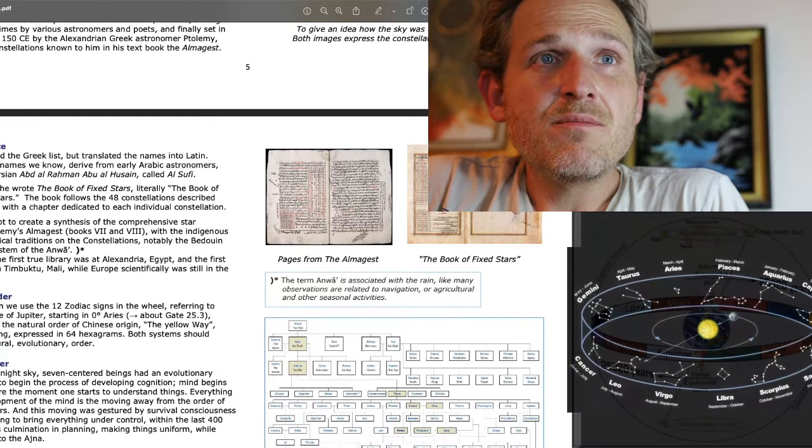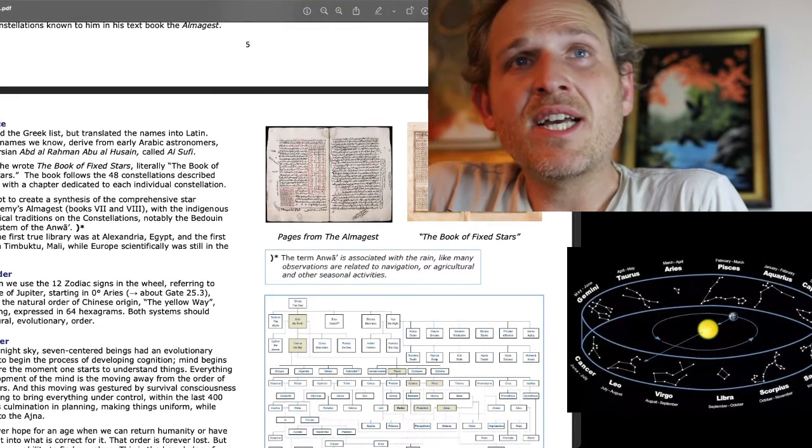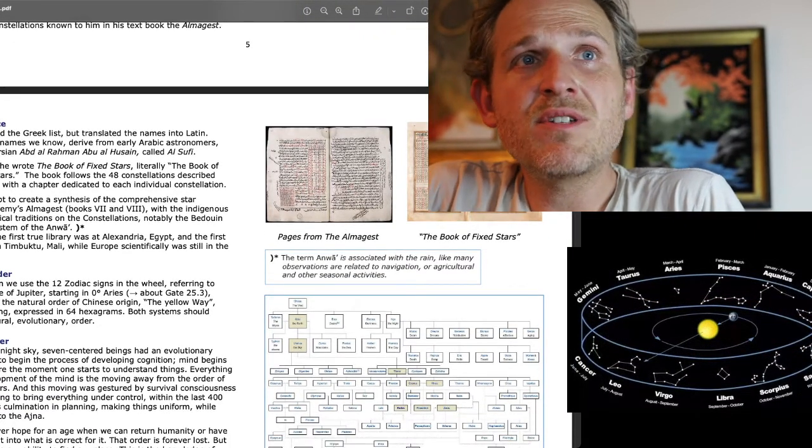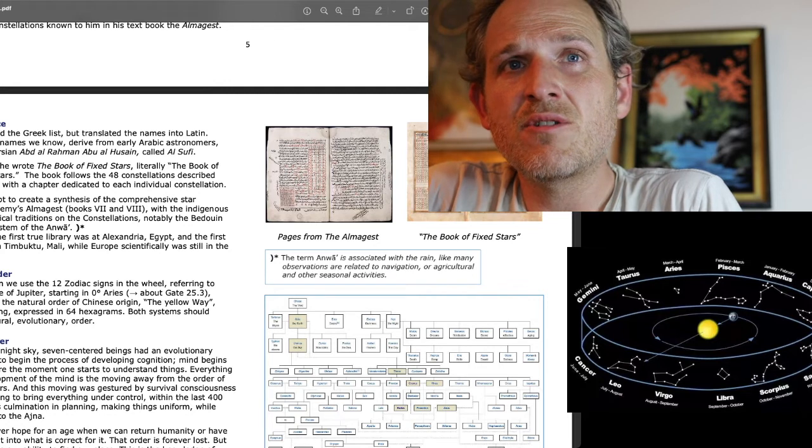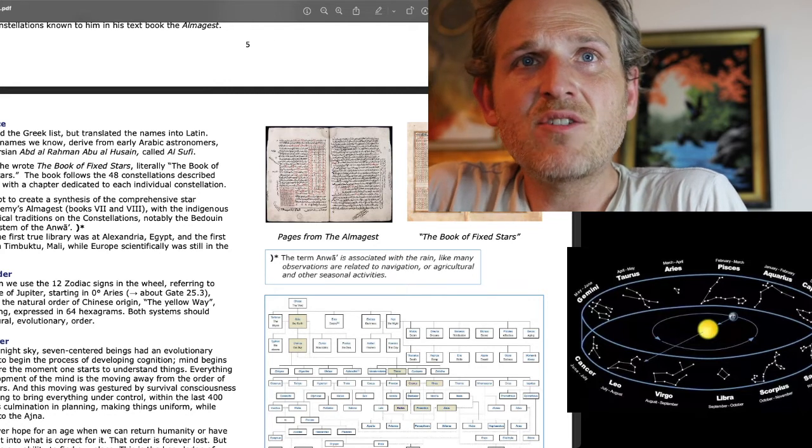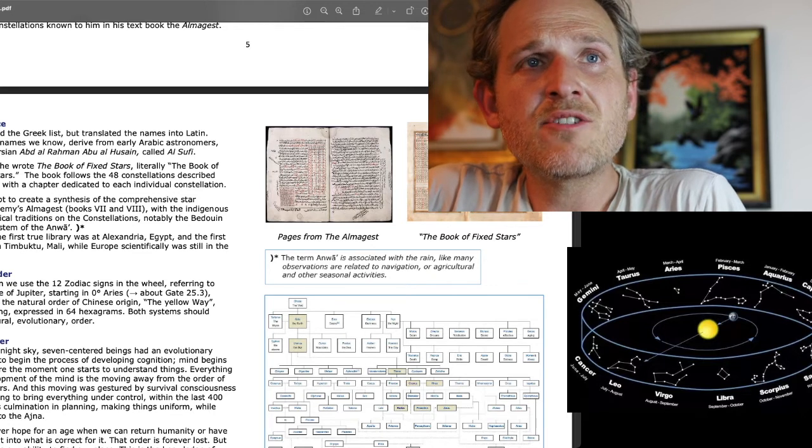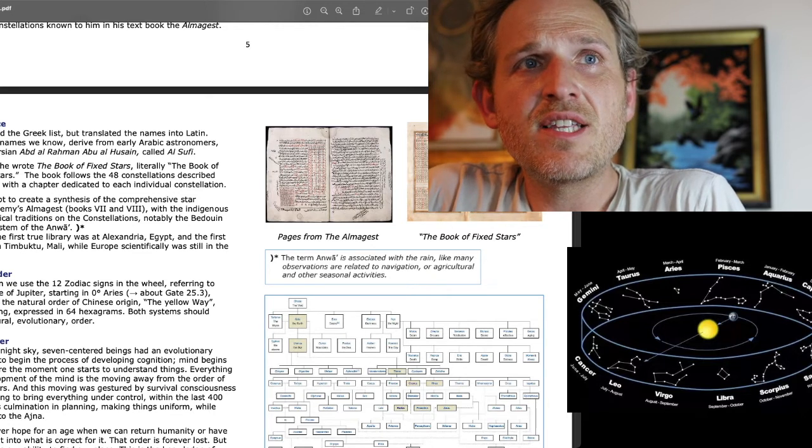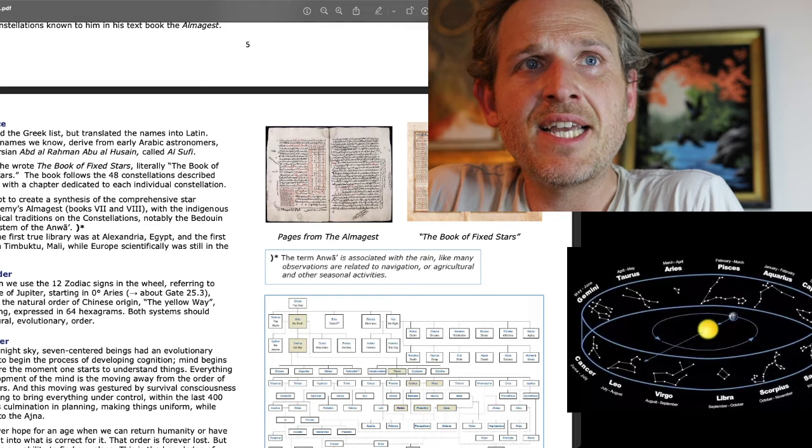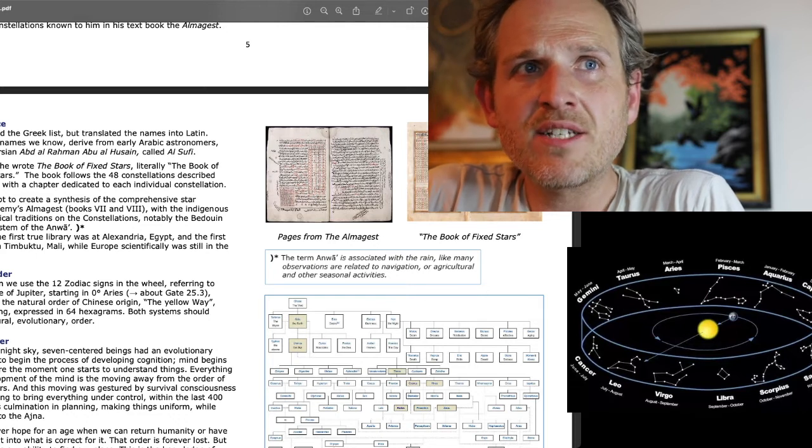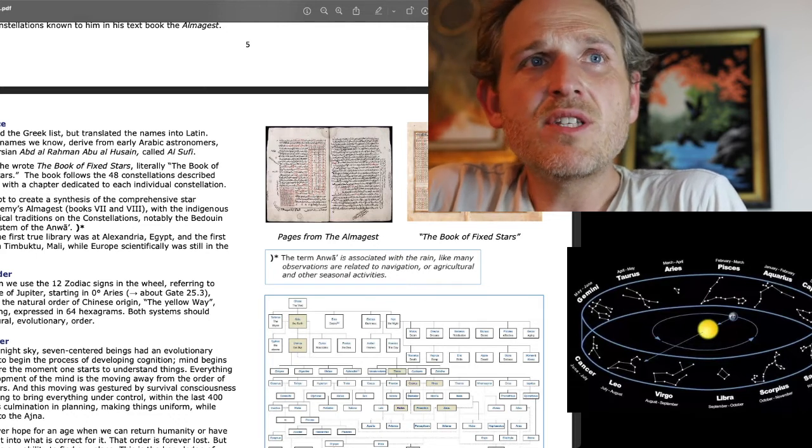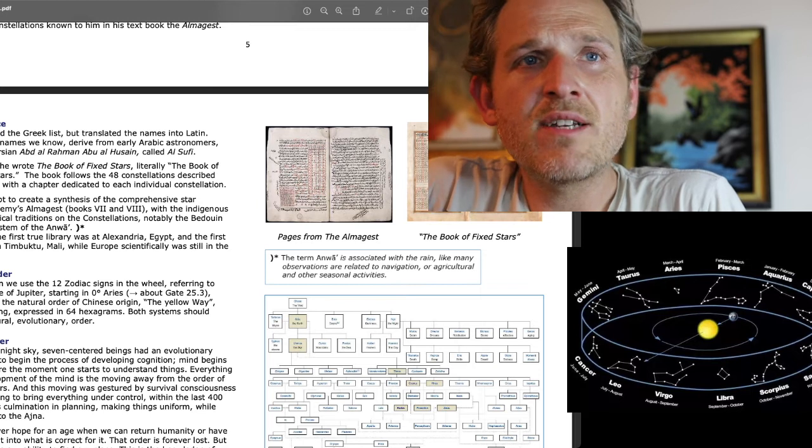The natural order. In human design, we use the 12 zodiac signs in the wheel, referring to the 12-year cycle of Jupiter, starting in 0 degrees Aries, about gate 25-3. Synergized with the natural order of Chinese origin, the yellow way, based on yin-yang, expressed in 64 hexagrams. Both systems should express the natural evolutionary order.